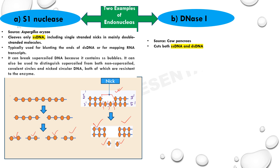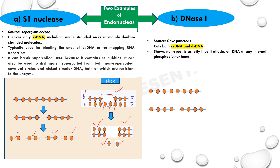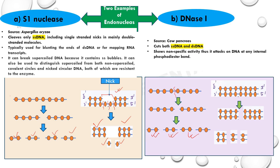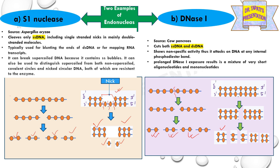The second example of an endonuclease enzyme is DNase I, sourced from cow pancreas. It cuts both single-stranded DNA and double-stranded DNA and shows non-specific activity — thus it attacks DNA at any internal phosphodiester bond. As shown in the figure, because it is non-specific, it can act on any position. Due to the action of this enzyme on double-stranded DNA, prolonged exposure results in a mixture of very short oligonucleotides and a few mononucleotides.